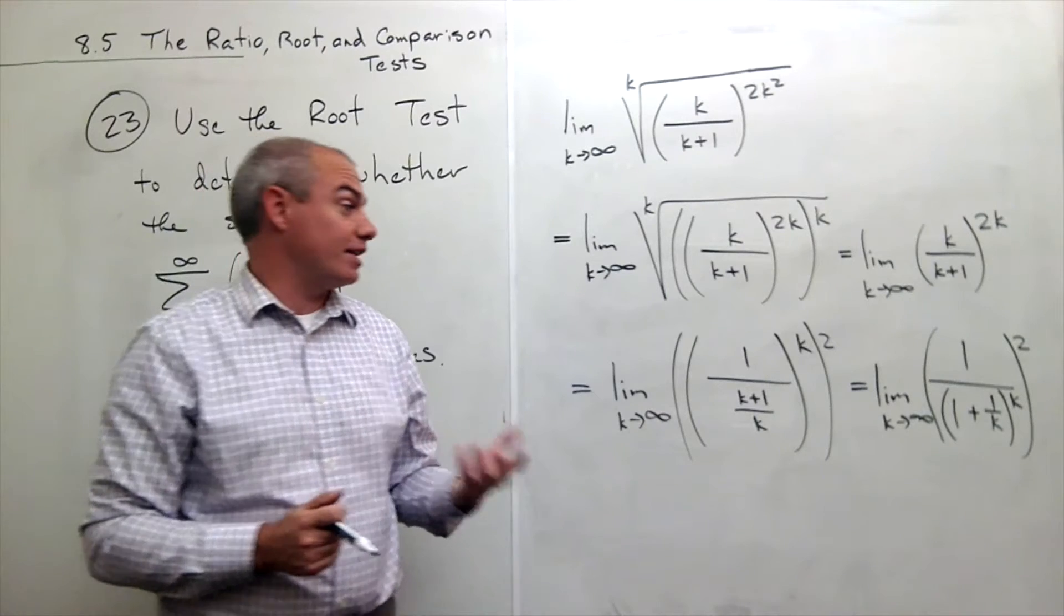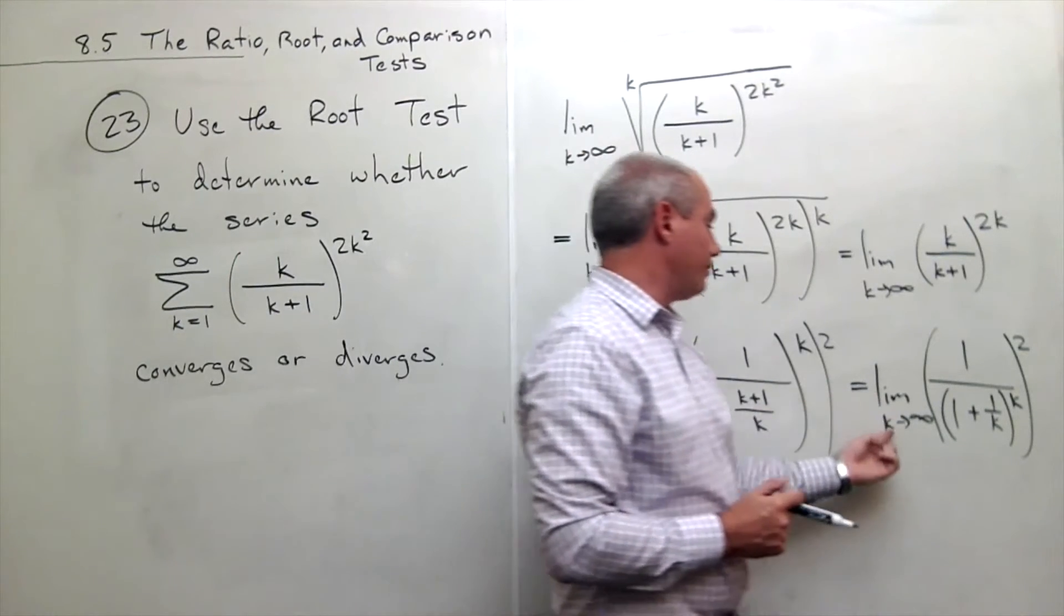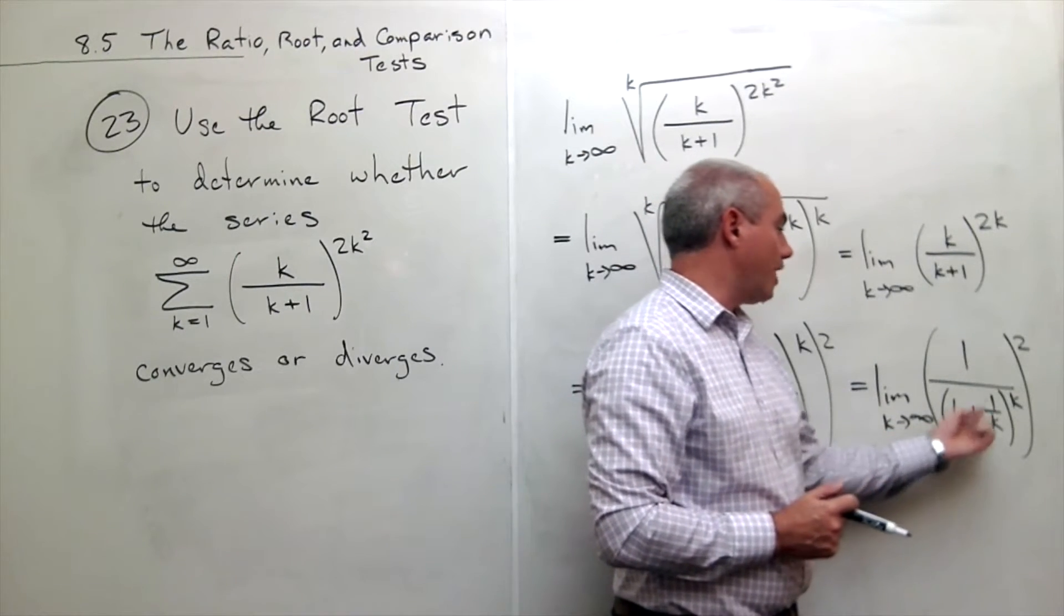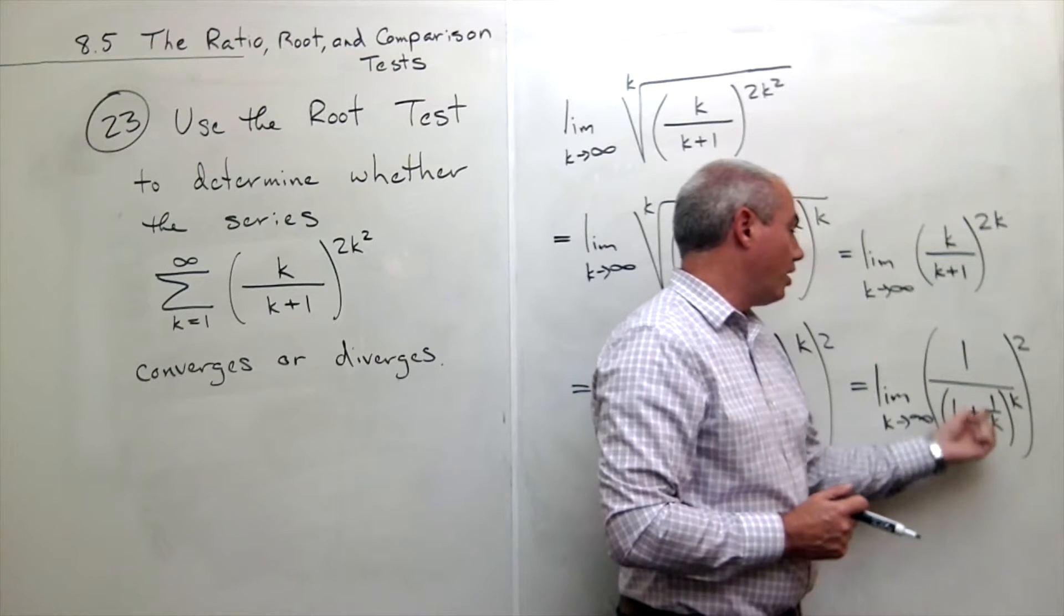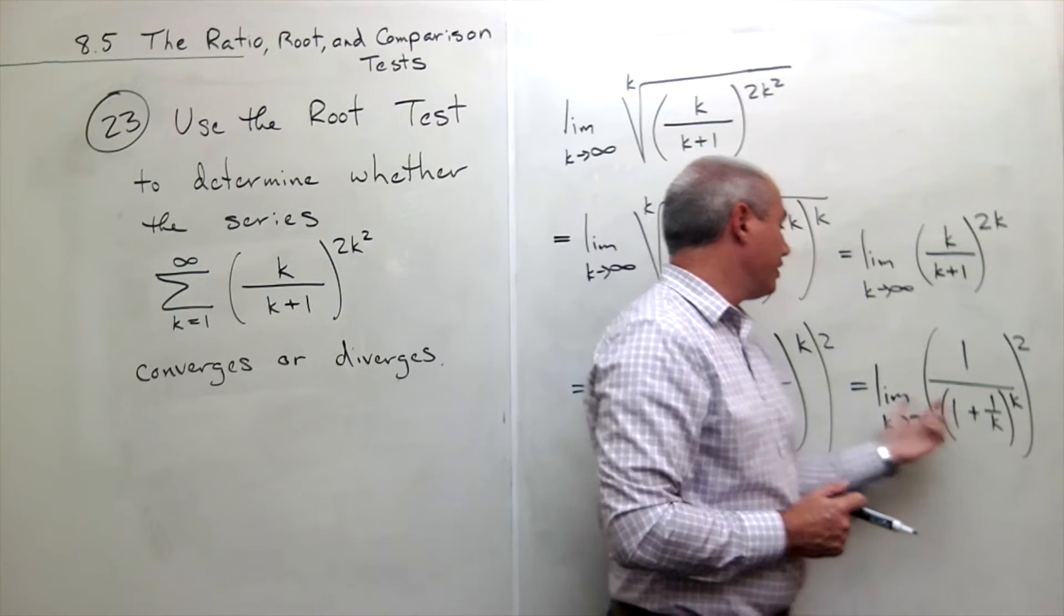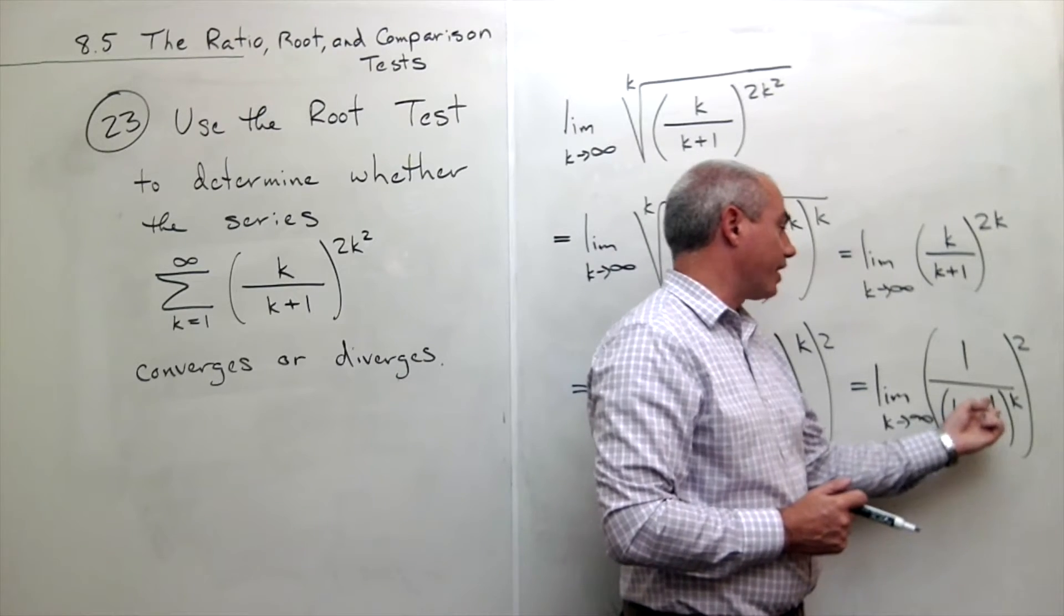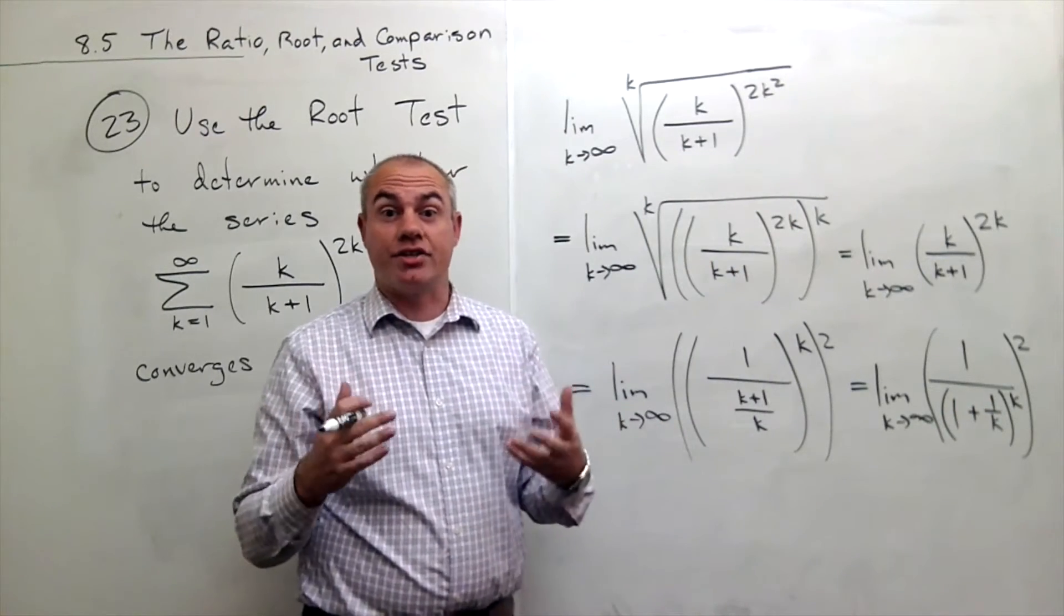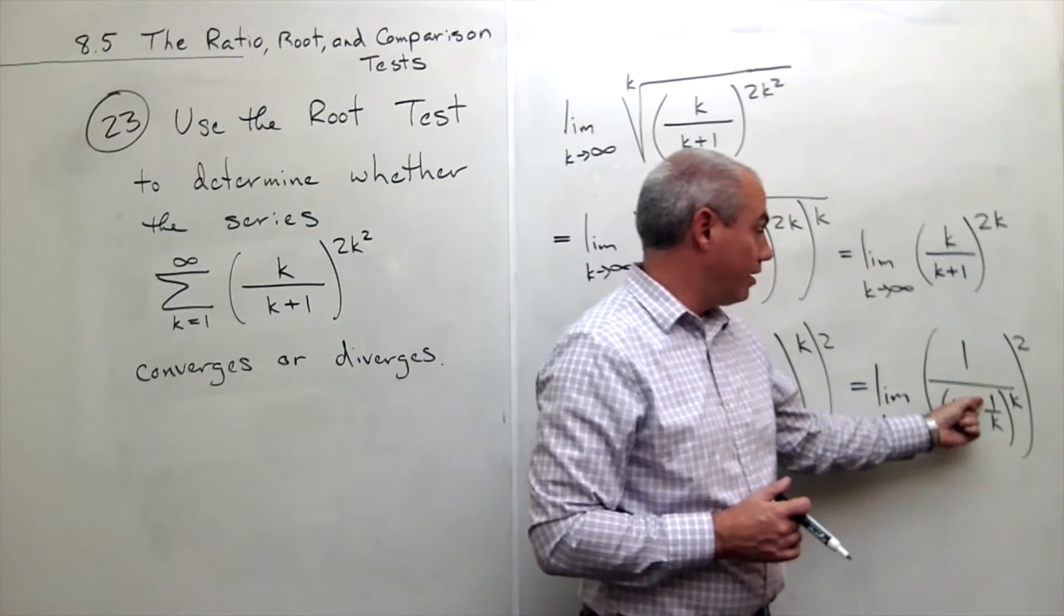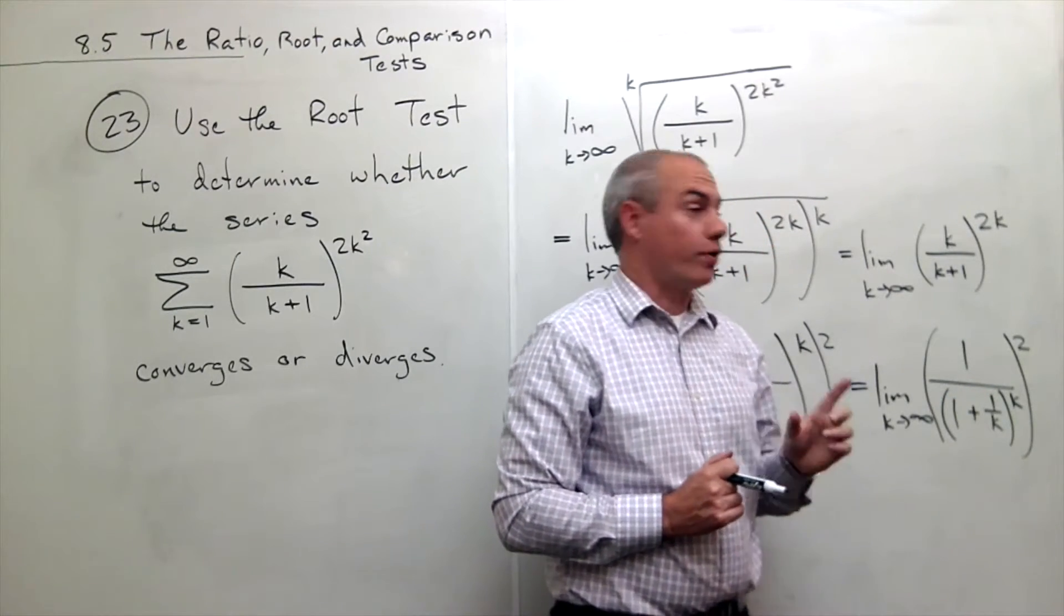That is one limit that you definitely need to know is if you have the limit as k goes to infinity of 1 plus something over k to the k, the answer to that limit is e to that something. In this case, the thing on top is a 1, and so it's e to the first.